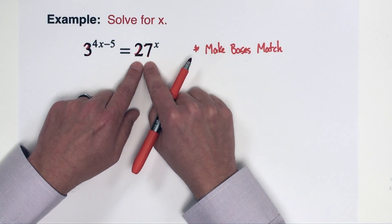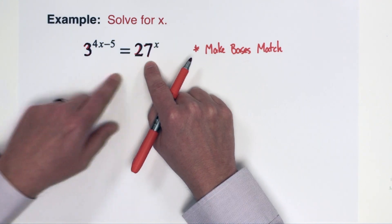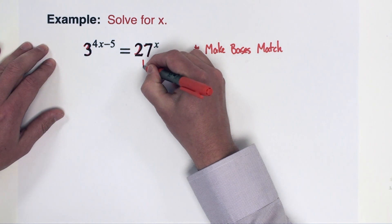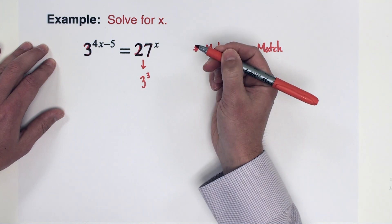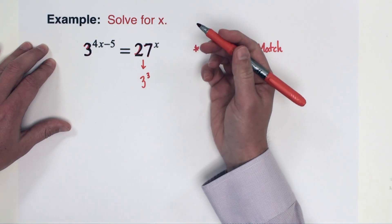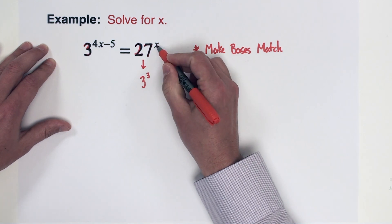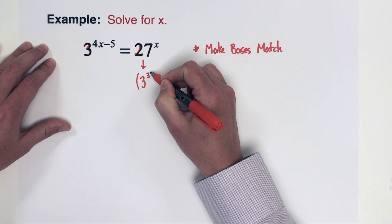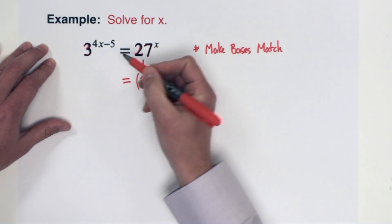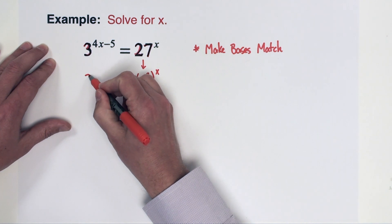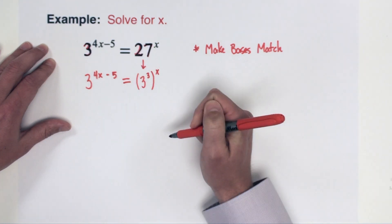I'm going to begin with the 27. I recognize 27 is a power of 3, so I'm going to change that 27 to 3 cubed. Everything else about the equation is going to stay exactly how it is. So the 27 was raised to the x, so now 3 cubed is raised to the x, and the other side of the equation is still just as it is, 3 raised to the 4x minus 5.